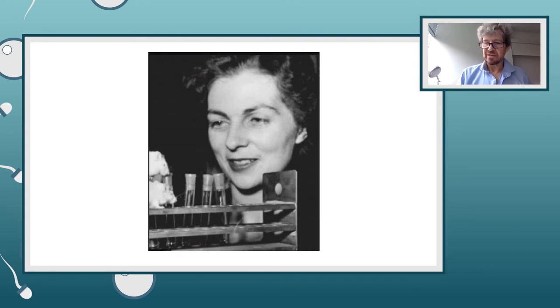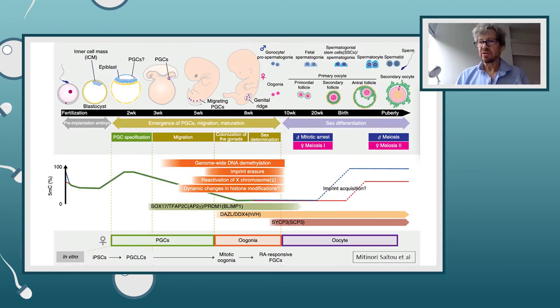So, this is a diagram from one of Mithinori Saiti's papers, which I think pretty much highlights everything that Anne did, because she was really interested in pretty much all of this whole pathway, from fertilization to the production of mature gametes. She tended not to do so much work herself on final stages of oogenesis or spermatogenesis, but she was certainly very interested in it and did publish some papers on both.